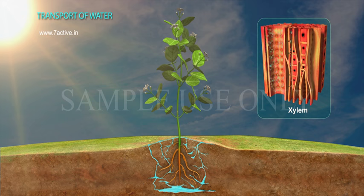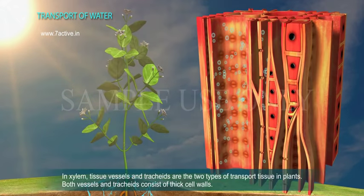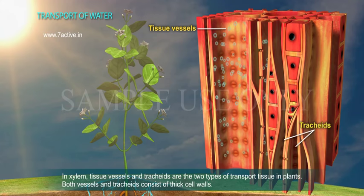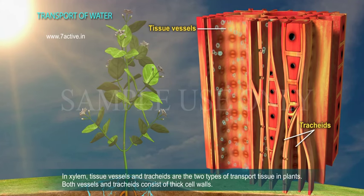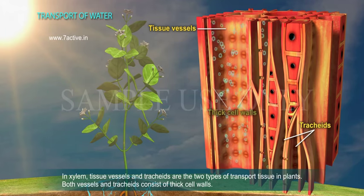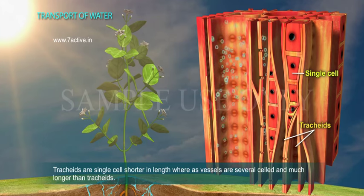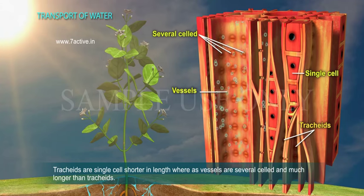Transport of Water. In xylem, vessels and tracheids are the two types of transport tissue. Both vessels and tracheids consist of thick cell walls. Tracheids are single-celled and shorter in length, whereas vessels are several-celled and much longer than tracheids.